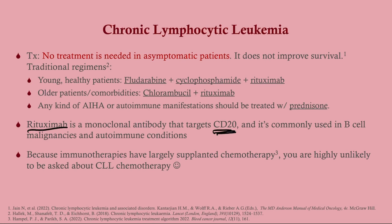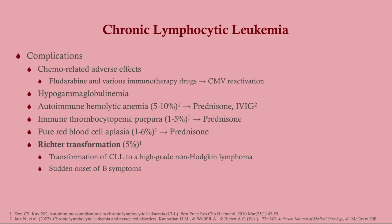Targeted immunotherapies and new drugs have largely supplanted the cytotoxics, so you're very unlikely to be asked about CLL chemotherapy specifically. As a low-yield point, with fludarabine and many immunotherapy drugs, you can get reactivation of latent viral infections like CMV, hypogammaglobulinemia, and autoimmune hemolytic anemia.